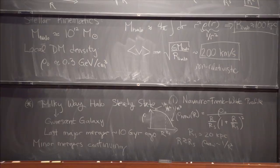That was the broad strokes introduction to how we map out where we expect the dark matter to be in our Milky Way. Now I want to move on to how we can use this information to make predictions for signals of dark matter annihilation.